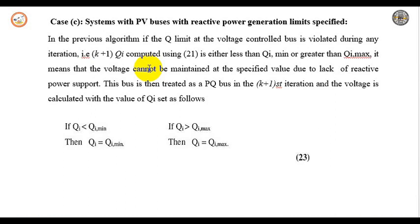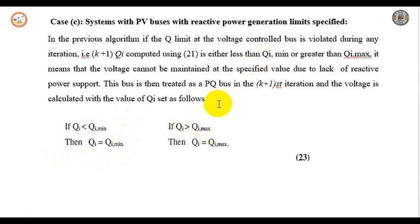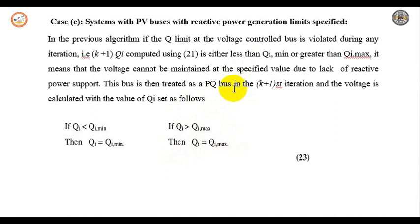If the calculated reactive power is less than Qi_min, set Q equal to Qi_min. If the calculated value is greater than Qi_max, also treat the PV bus as a PQ bus and set Q equal to Qi_max. For every iteration, check for the limits. If the value falls within limits, treat the bus back as a PV bus and continue calculating further iterations of reactive power.